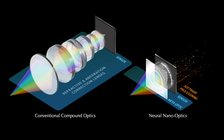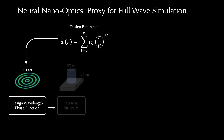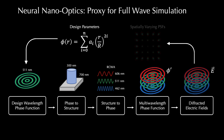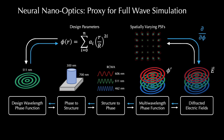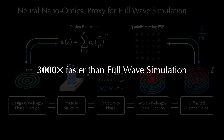In our work, we jointly design nano-optics and software processing using AI techniques, allowing us to produce neural nano-optics. To achieve this, we learn a nano-optic by using an efficient, differentiable proxy function that maps phase values to spatially varying PSFs. This allows us to design the nano-optics 3000 times faster than using full wave simulation.